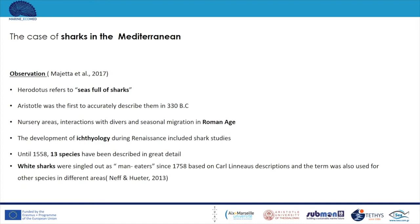The first ancient Greek historian Herodotus refers to seas as full of sharks, proving the quantity of coastal marine fauna populations. Another ancient Greek was the first to accurately describe sharks and categorize them according to their main characteristics. During the Roman age, nursery areas, interactions with divers, and seasonal migration were described through observations of that period. During the Renaissance, a new topic of science developed — ichthyology — which included shark studies. Until 1558, 13 species of sharks had been described in great detail.